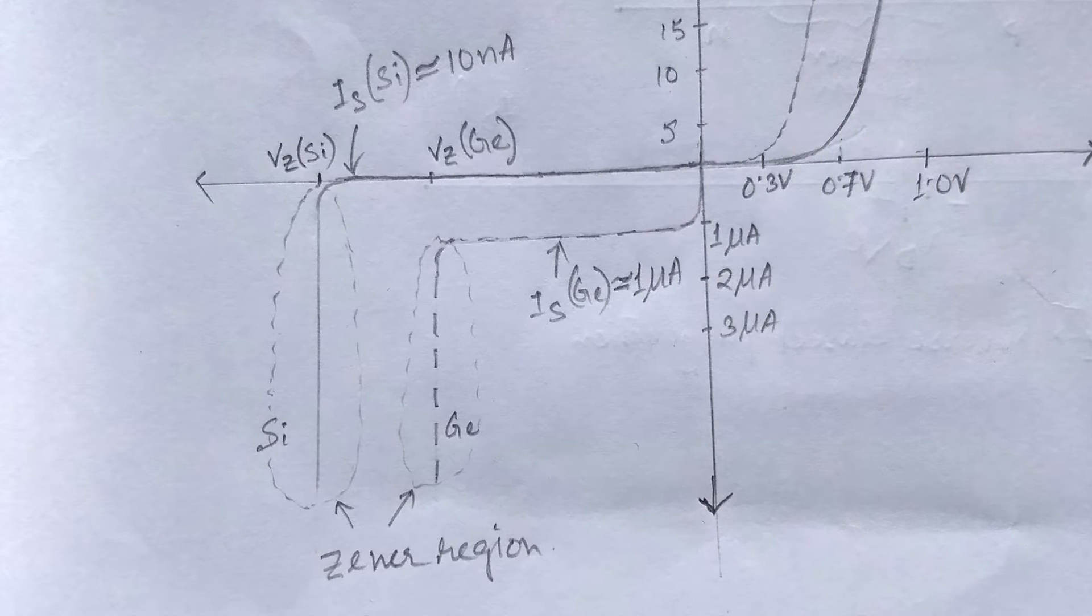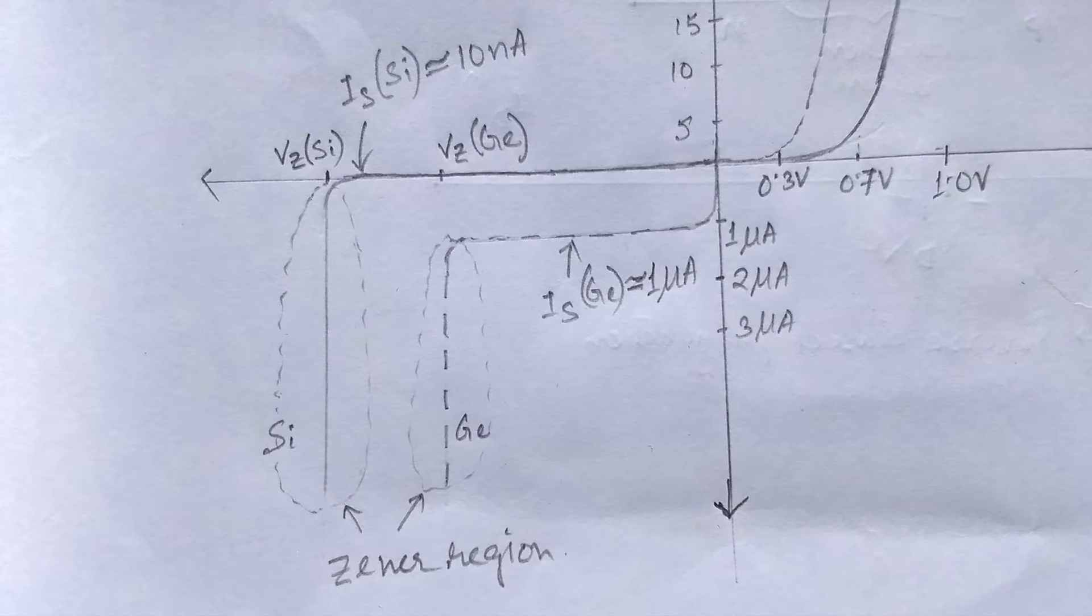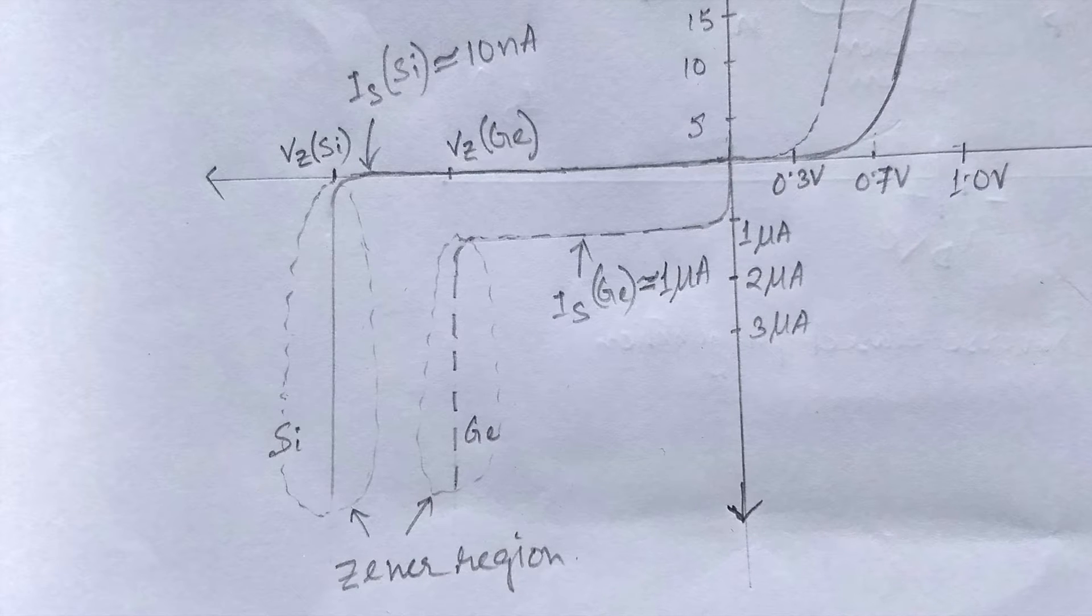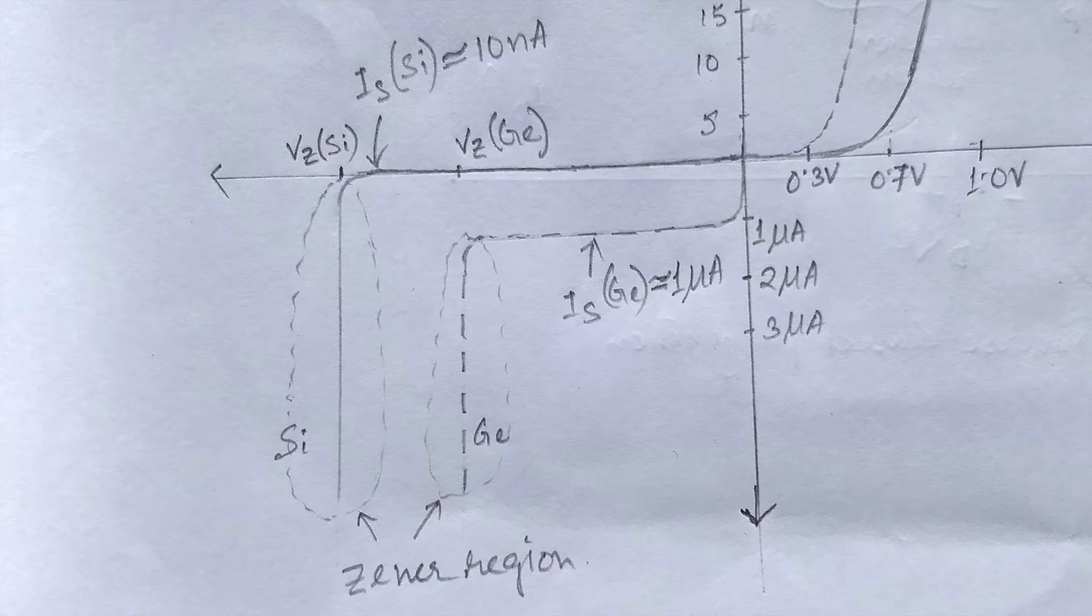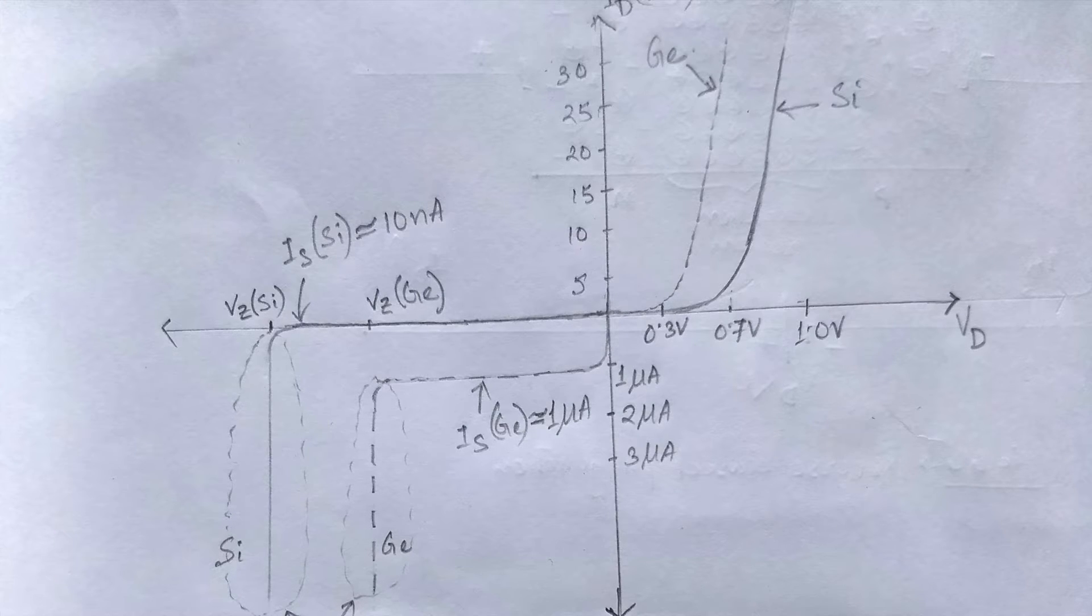Now let us compare between silicon and germanium. Silicon has higher peak inverse voltage and current rating and a wider temperature range than germanium.